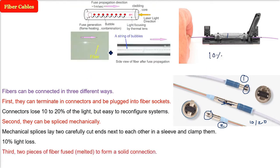The third is fusing the two fibers together. Two pieces of fiber are fused and melted to form a solid connection. This is how they are melted. You can get some bubbles, but it will be like a seamless connection. A fusion splice is almost as good as a single drawn fiber.